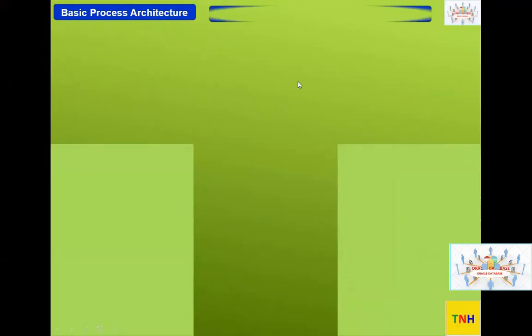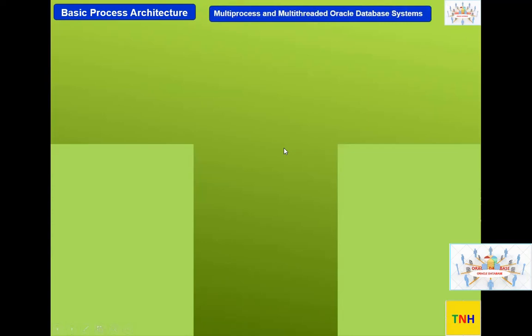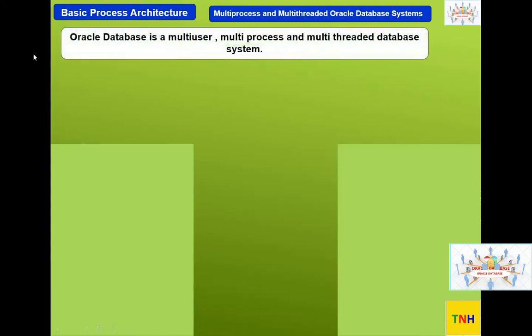Under basic process architecture, we'll continue to the next session — this will be the last one on basic process architecture. The topic is multi-processes and multi-threaded Oracle database systems. Oracle is a multi-user, multi-process, and multi-threaded database system. In the industry, some databases claim to be multi-user, some multi-process, but Oracle has all three significant features.